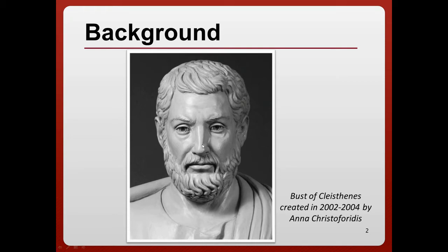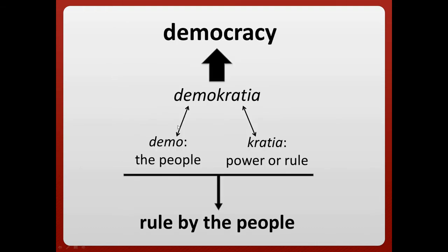In 508 BCE, a wealthy Athenian named Cleisthenes rose to power in Athens and introduced a system known as democracy. Democracy is a form of government where political power comes from the people.